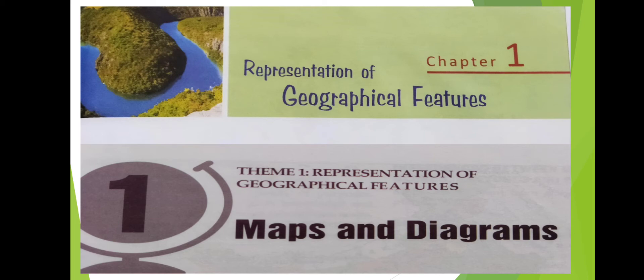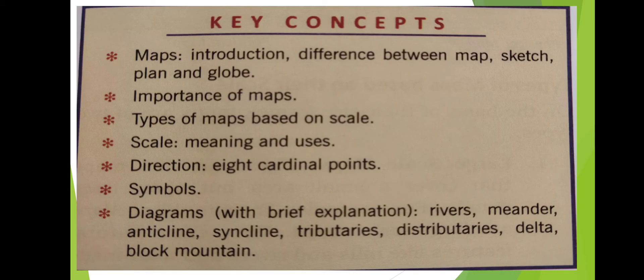Before going to the lesson, let us understand about the key concepts — which points we are going to discuss in the coming video. These include maps, introduction of maps, differences between maps and sketch, plan and globe, importance of maps, types of maps based on the scale, scale meaning and uses, direction like 8 cardinal points, symbols, and diagrams with brief explanations like river, meander, tick line, sink line, tributaries, distributaries, delta, and block mountains.